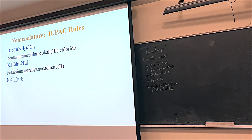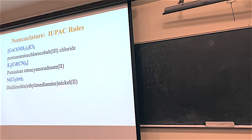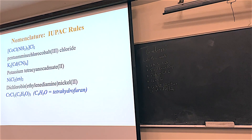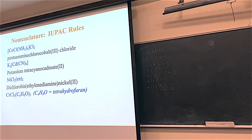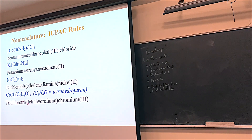This compound has two ethylenediamines. Ethylenediamine has a Greek prefix in it, so we'll use bis. Chloro comes before ethylenediamine alphabetically. So: dichlorobis(ethylenediamine)nickel(2). And then there's one I had to include because I used to make it all the time. I used to use a solvent called tetrahydrofuran — THF — which bonded to chromium. This compound has three chlorines and three tetrahydrofurans — tetra being the Greek prefix. So: chloro before tetrahydrofuran alphabetically gives trichlorotris(tetrahydrofuran)chromium(3). THF is neutral.